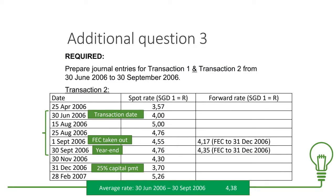Let's move on to Transaction 2 — this is where we start to use the forward rates. Transaction 2 has the FEC. Remember what our question said: we want to record from the 30th of June all the way to the 30th of September — not recording anything else, just those transactions. Let's start with the first day.